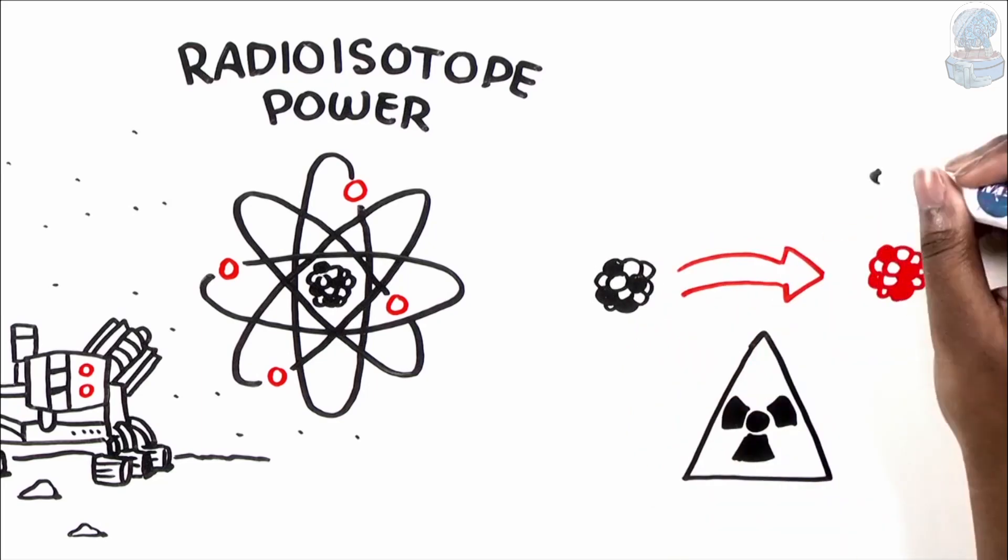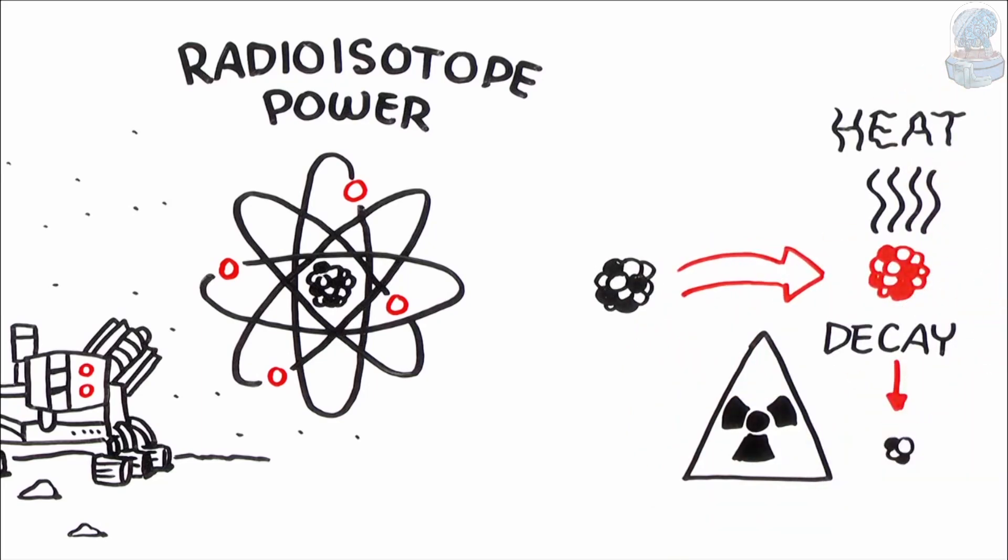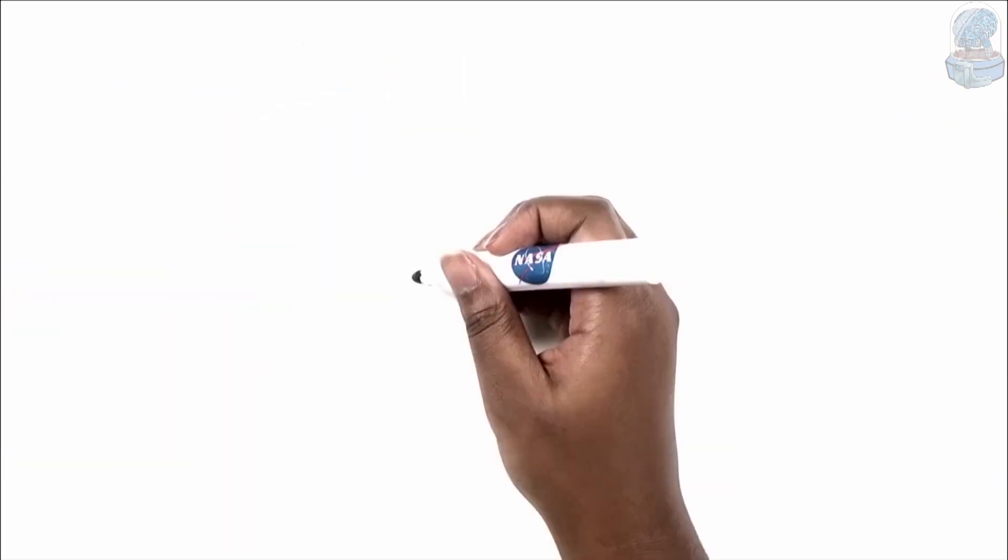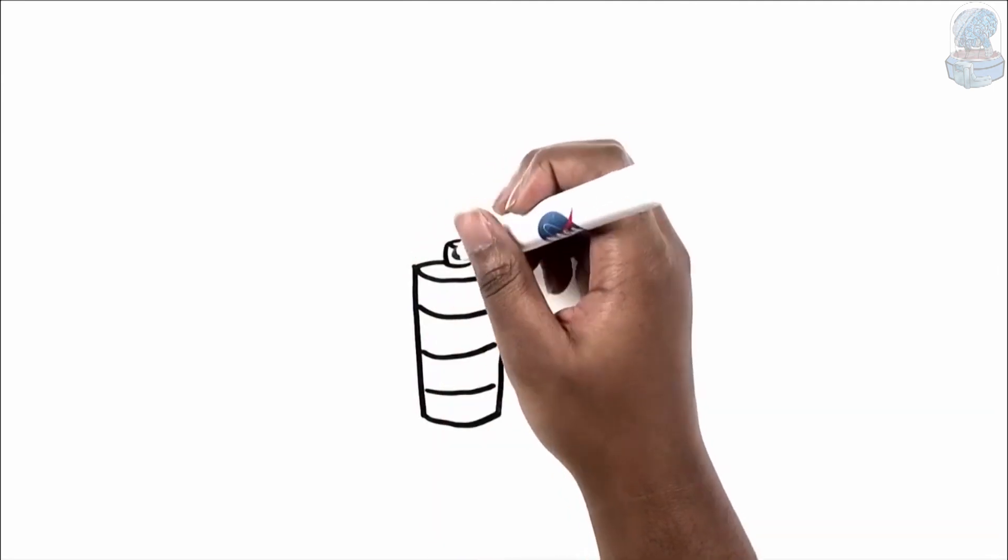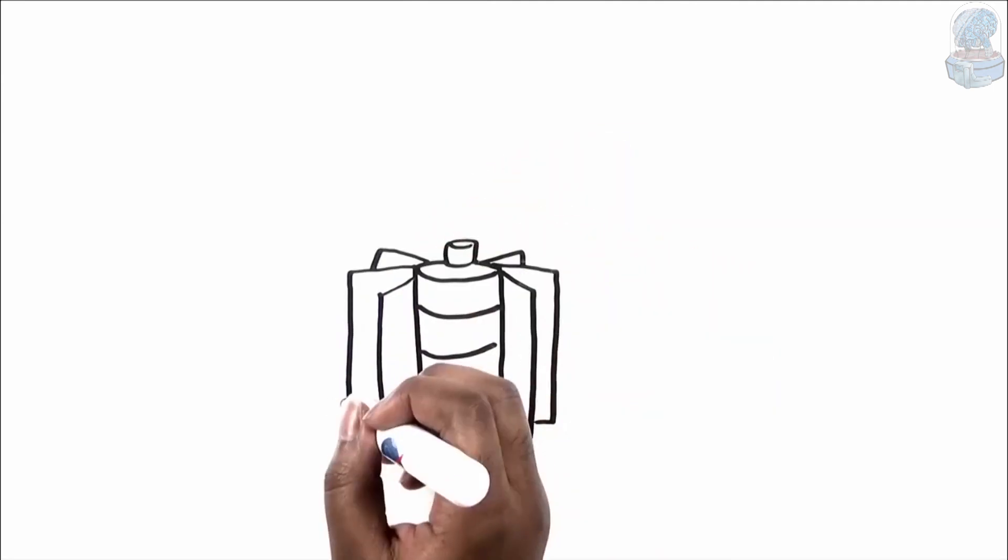A radioactive substance releases heat as it breaks down or decays. A system that converts that heat into electricity is called a radioisotope power system.